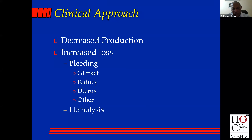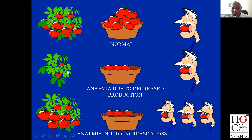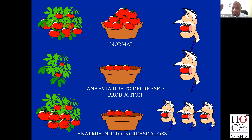Hemolysis is the second condition where you lose blood. I like this cartoon — this is tomatoes in a shop. There is good production of tomatoes and normal consumption, so there is a good level of tomato in the shop. Here, the field has been damaged by pest or no rain, so there is no production and no tomatoes in the shop. And here, you have no tomatoes in the shop but there's absolutely no problem with production — it's just that it's festival time and people have been buying all the tomatoes. Simple algorithm: is it a production problem or is it a loss problem?